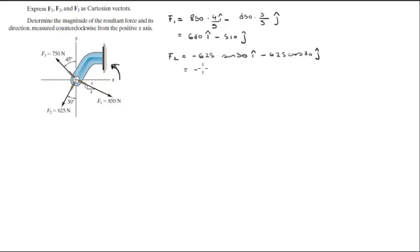When you solve this, you get negative 312.5 in the i direction minus 541.27 in the j direction.